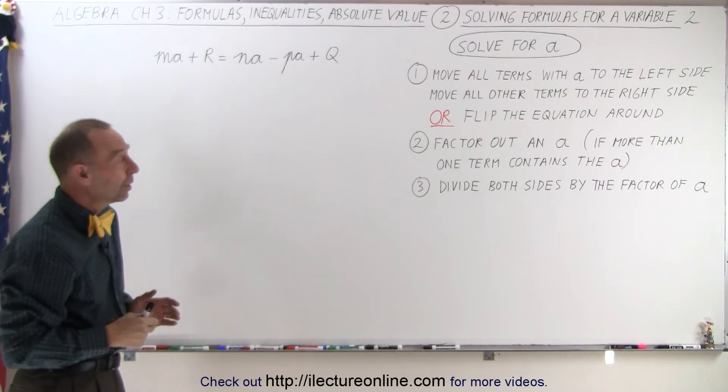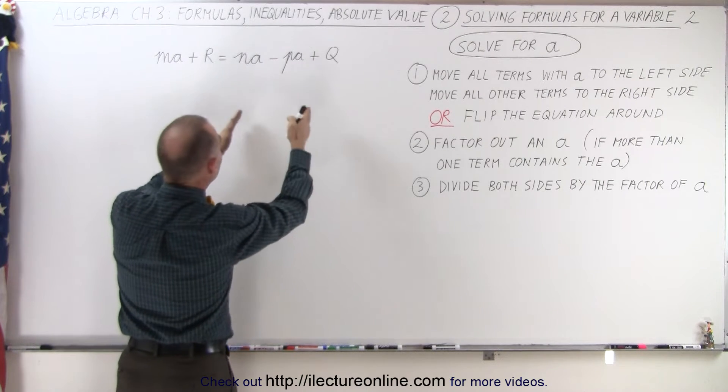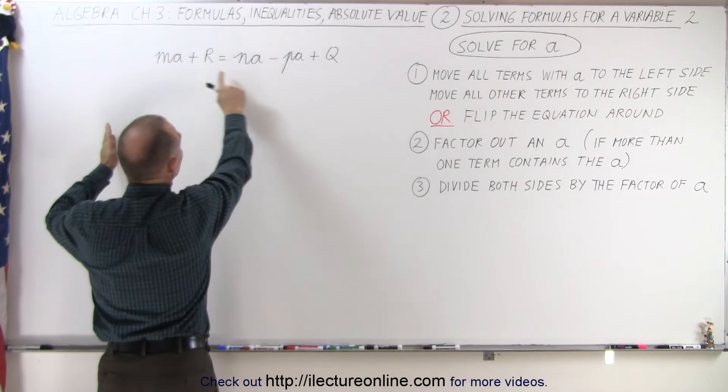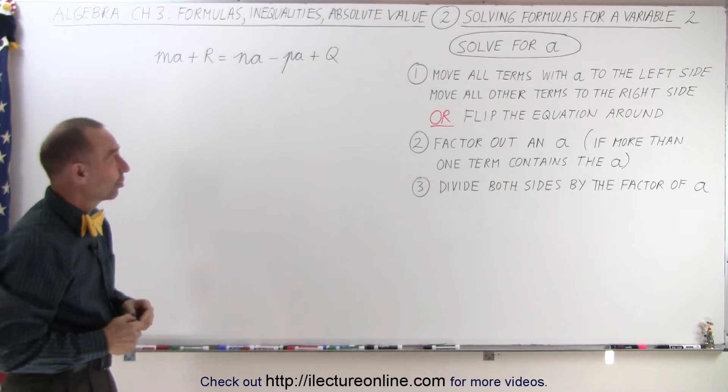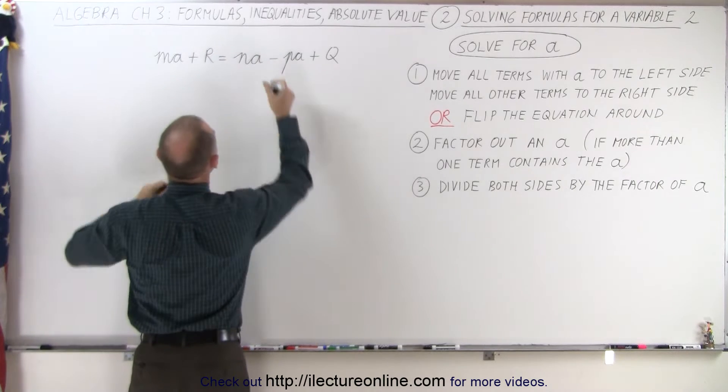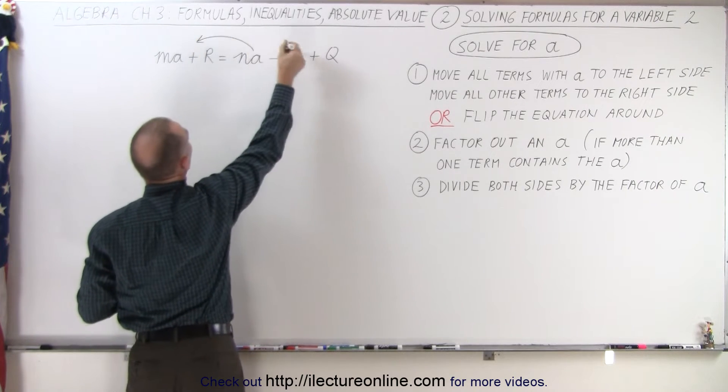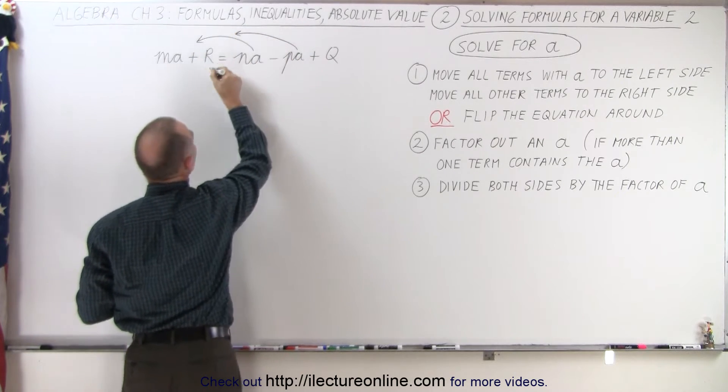So therefore, when we do step number 1, we want to move all the terms with the A to one side and everything else, like R, to the right side. Flipping the equation around is not going to help us much. So we're going to go ahead and move the NA to the left, the PA to the left, and the R to the right.